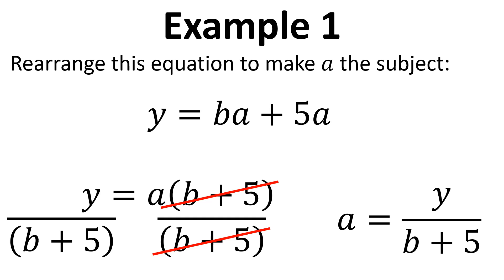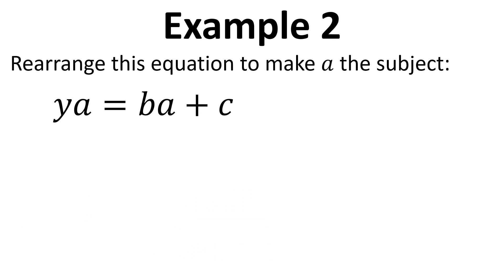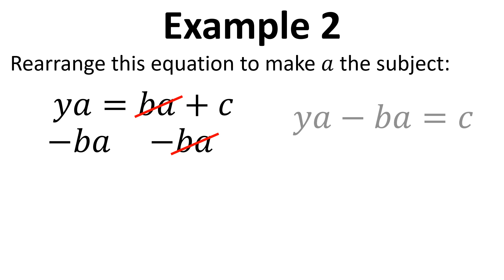So that is the first example. In the next example we've got A on the left hand side and on the right hand side. So what we're going to do is subtract BA from both sides in order to get all the A terms onto one side of the equation. BA cancels on the right hand side, leaving us with YA minus BA equals C.